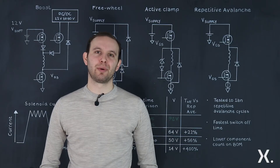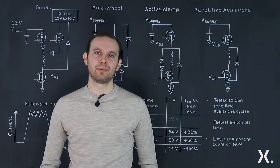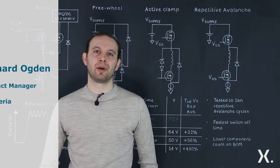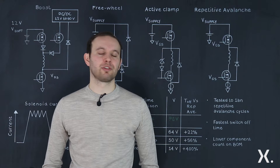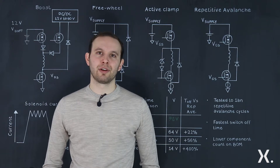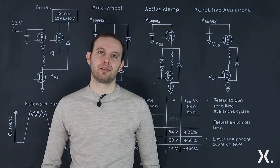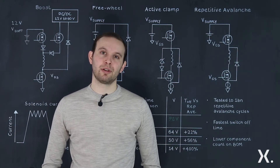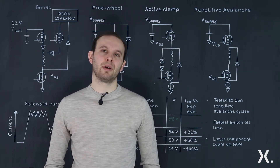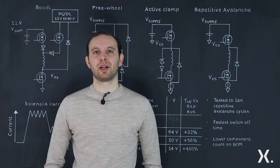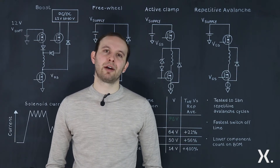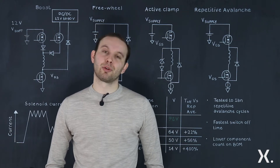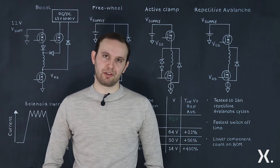Hello and welcome to this Nexperia quick learning video. I'm Richard, product manager here at Nexperia, and today I'm here to talk about the four ways to control a solenoid or an actuator for automotive applications. The example we're going to talk through today is for a fuel injector inside the engine control circuit. However, this is applicable for any application inside the car where we have an actuator or a solenoid, such as a transmission system or a braking system.